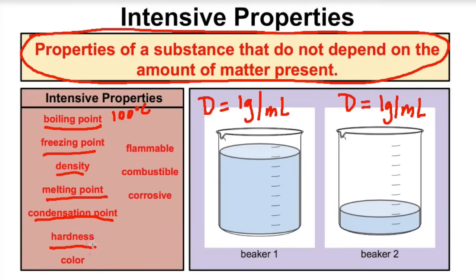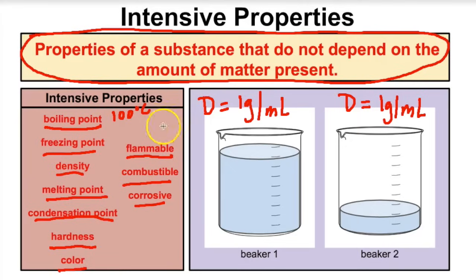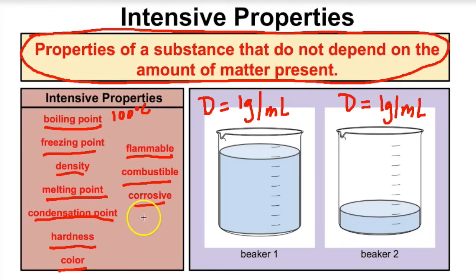Hardness is also an intensive property. In earth science you learned about the hardness scale for minerals — diamond is the hardest mineral, and it doesn't matter whether you have a big diamond or a little diamond, they both have the same hardness. Color is also an intensive property. Flammability, combustibility, and corrosiveness are intensive properties as well. Gasoline is equally flammable whether you have a lot or a little. Oxygen is combustible regardless of amount, and battery acid is corrosive regardless of how much you have.